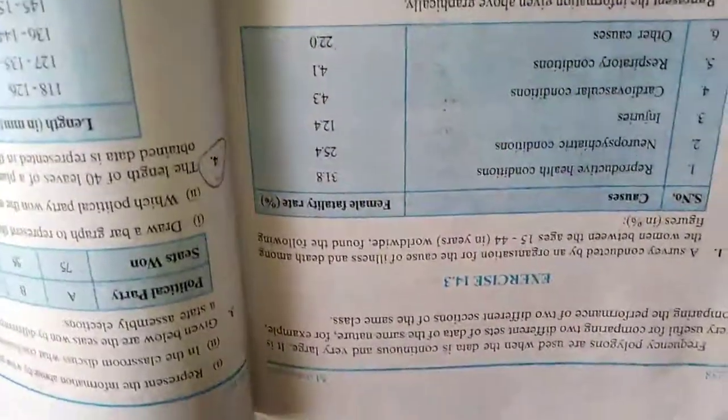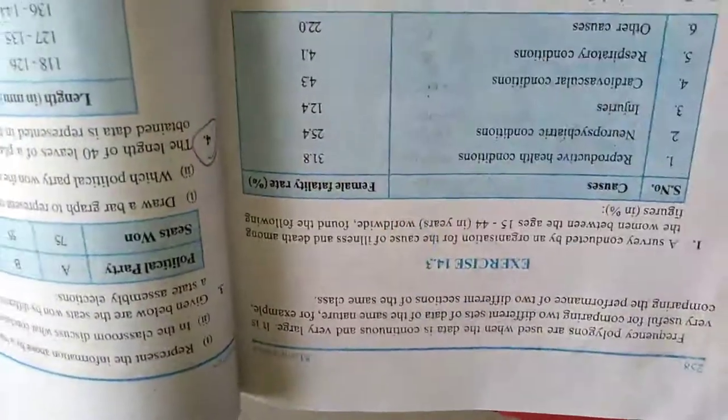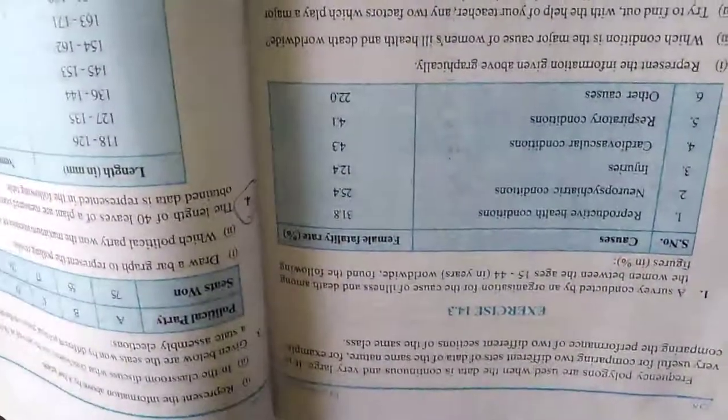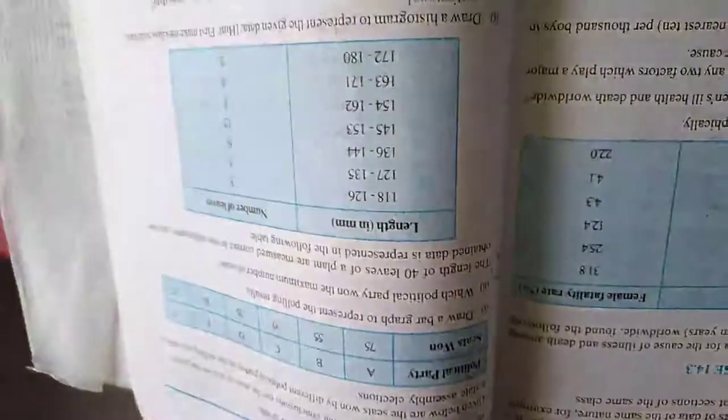So like this you have to write. Write the exercise. If it is a note, just consider this as a note. First you have to write that exercise number in top, then this side you have to write the question. Then here this side, that means left hand side you have to write the question and right hand side you have to draw the bar graph. Cut the graph sheet according to your note size and paste in the right hand side. In that the graph wants to be in there. Like that you have to write.